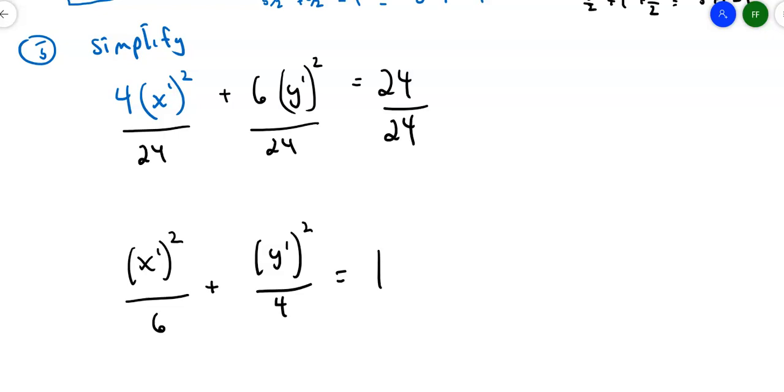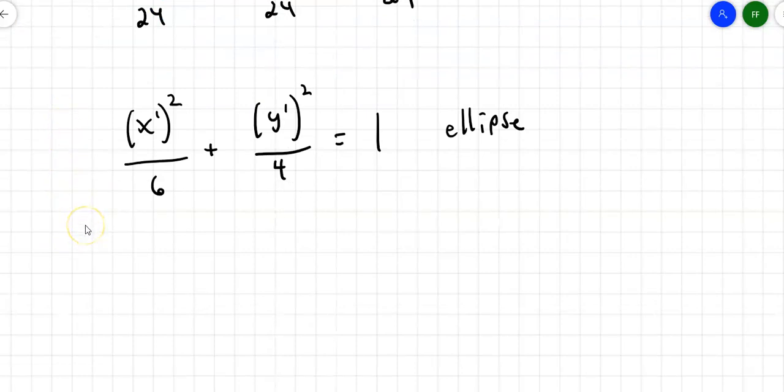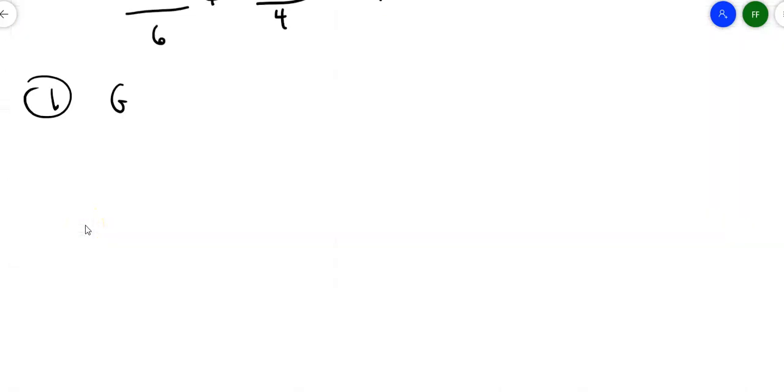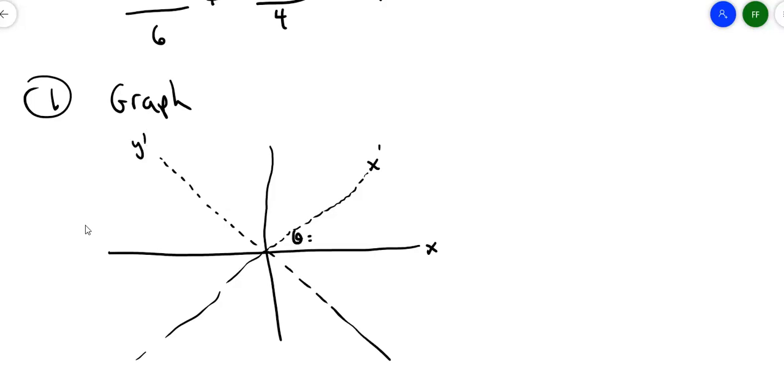Now I want to graph this. I've already figured out it's an ellipse. Where are my axes? My axes are at a 45 degree angle. So if I put my vertical and horizontal axes in here, 45 degree angle looks like this. So these are my new axes. This is the x' axis, and that's the y' axis. I moved it at a 45 degree or π/4 angle.